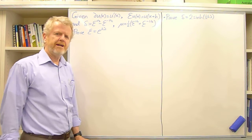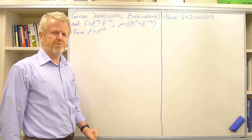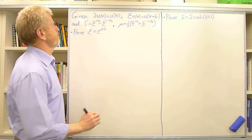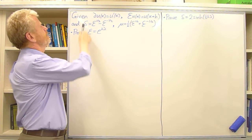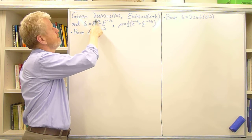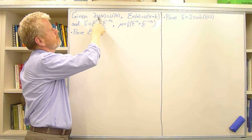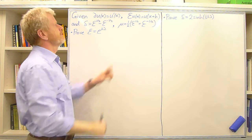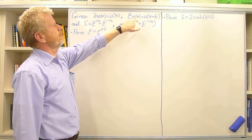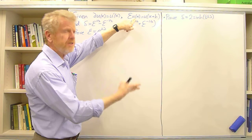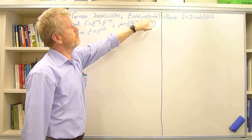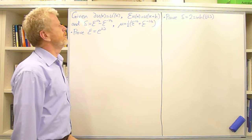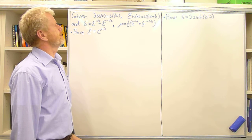Let's establish some operator algebra to support discretisations of differential equations. The operator D acting on a function u(x) is just the derivative u'(x), and E acting on u(x) is the shift operator, u(x+h), where h is the spacing of the grid in space.